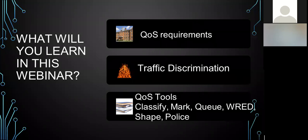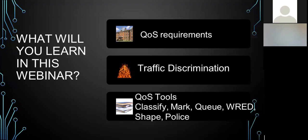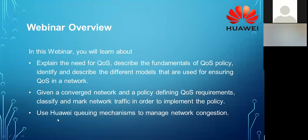The QoS tools we'll focus on include tools to classify and mark traffic, tools to place marked traffic into queues, and techniques to decide which traffic gets more service. These include Weighted Random Early Detection (WRED) for congestion avoidance, traffic shaping, traffic policing for congestion management, and more. These are the overall QoS concepts we are going to learn.